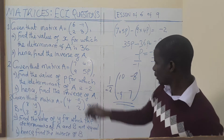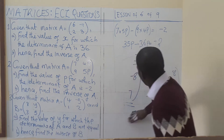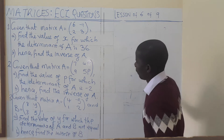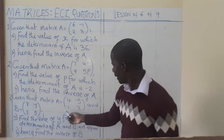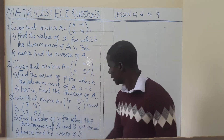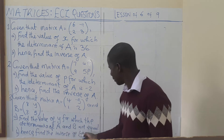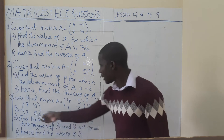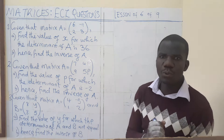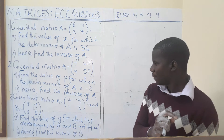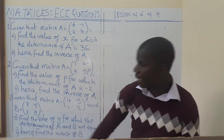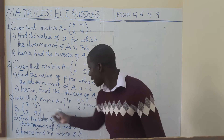Now we go to the last question. Given that matrix A is this and matrix B is this one, find the value of Y for which these two matrices have the same determinant. Since A and B have the same determinant, we can find the determinant of A and use it to find Y.